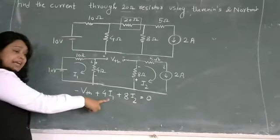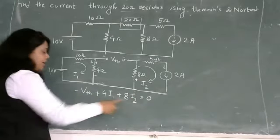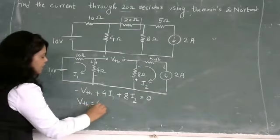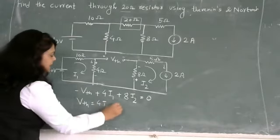I1 is equal to 0. I2 is equal to 0. VTH is equal to 4i1 plus 8i2.